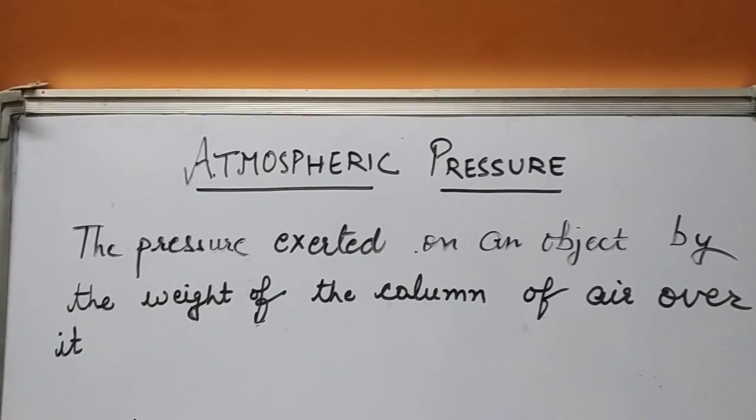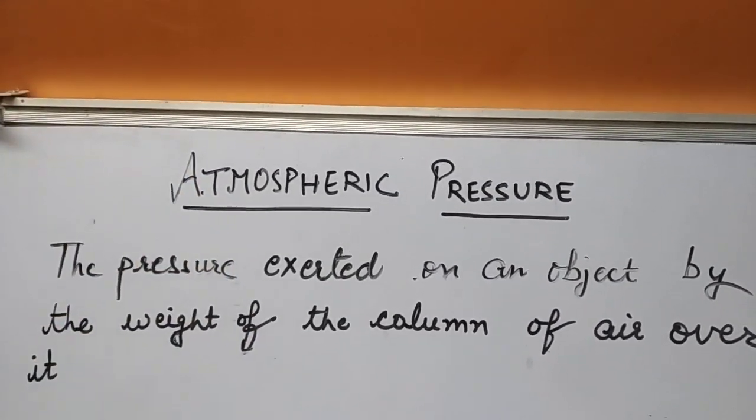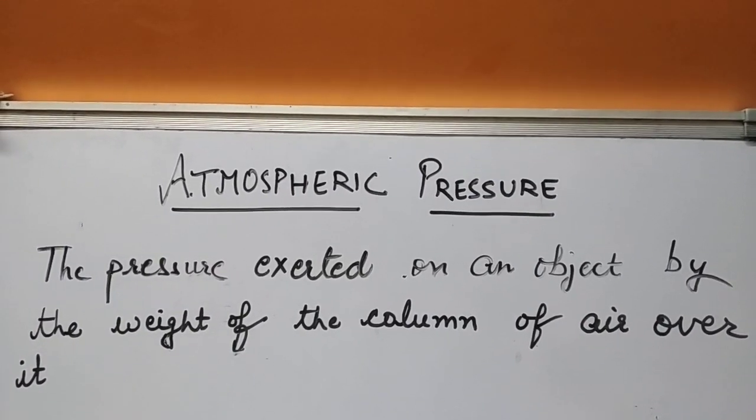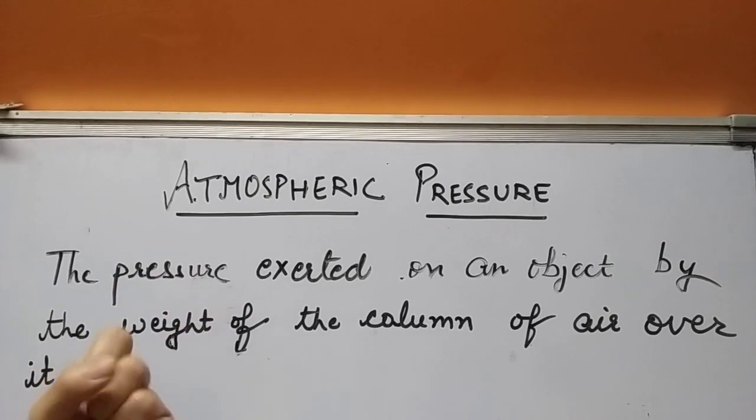If we have to define it properly, we will say the pressure exerted on an object by the weight of the column of air over it is atmospheric pressure. If we are talking about one particular object, whatever air is present just above it, that air is exerting certain pressure on that object.